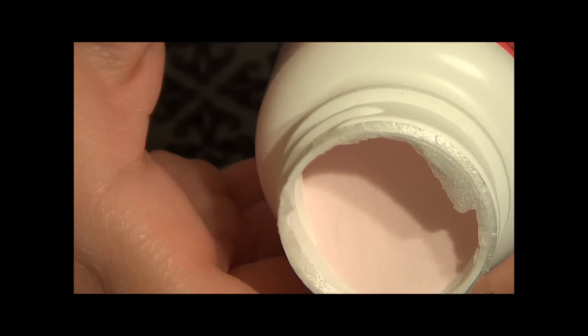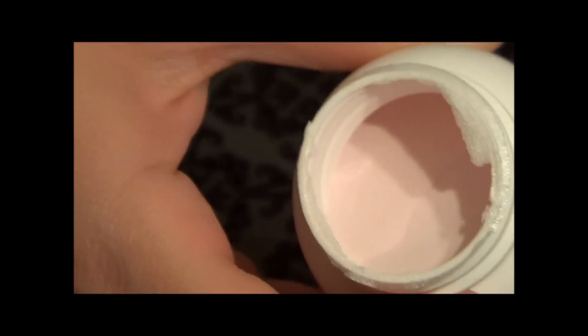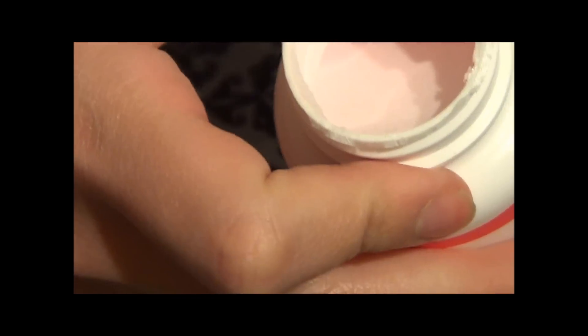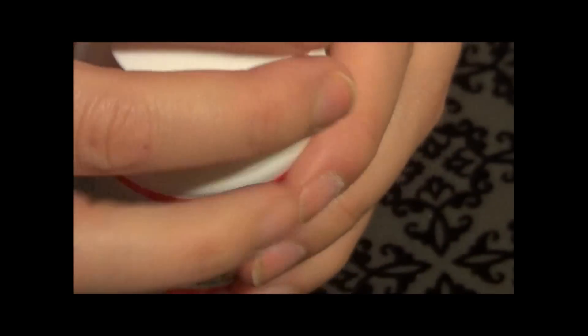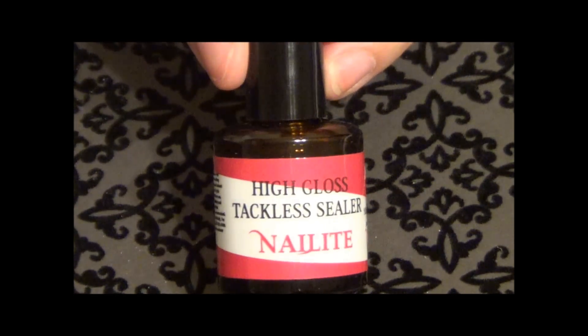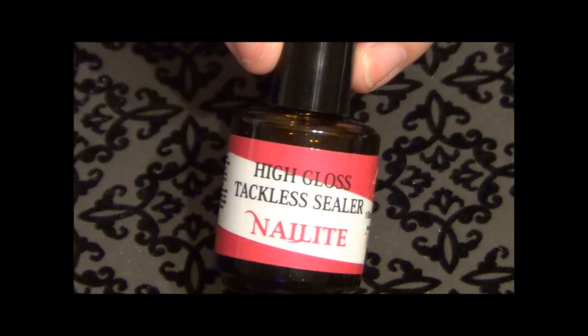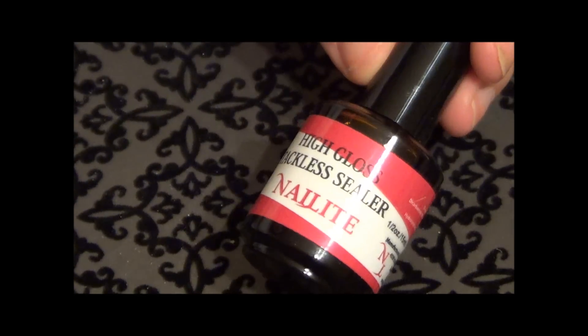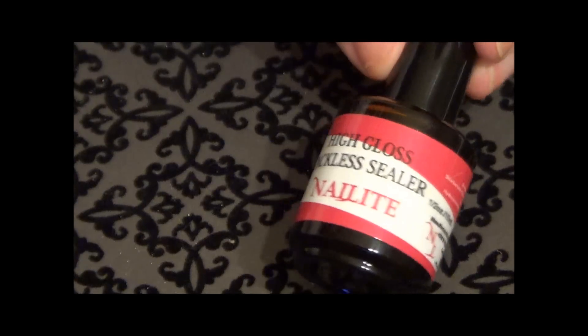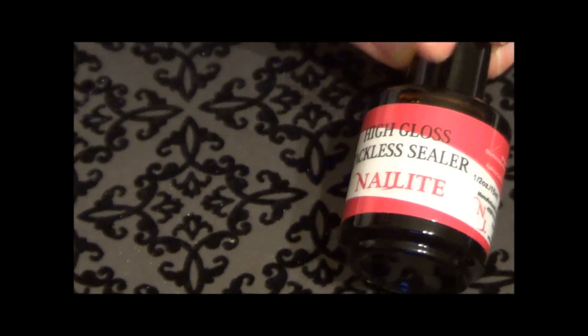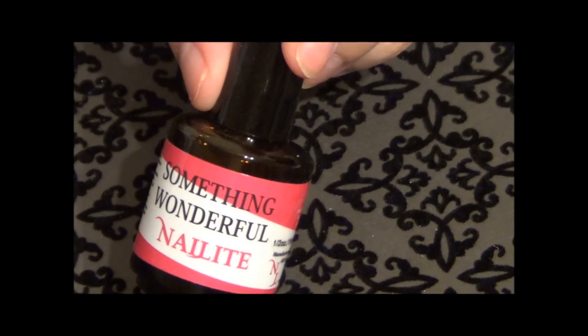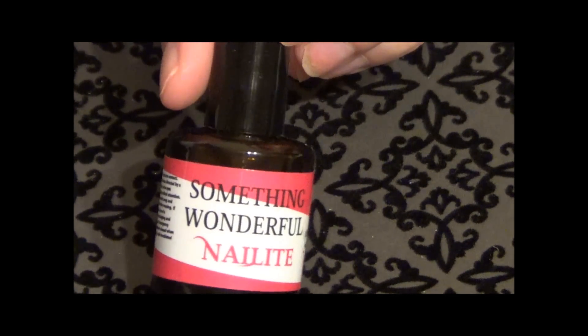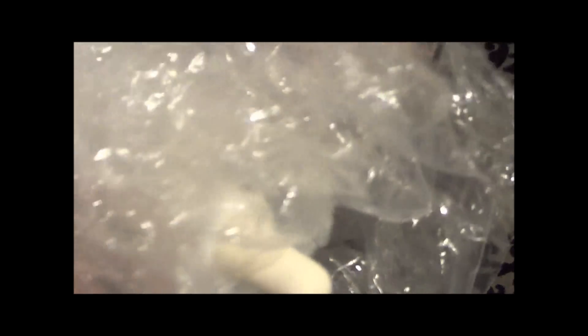¿Dónde está? No sé si lo puedan ver. Pero sí, sí está rosa. Miren, es el Deep Pink. Y este estaba a, si no me equivoco, $10.99. Este, que es el High Gloss Tackless Sealer, que básicamente es el gel UV, el top coat, para darle brillo, el toque final. Este, que es el Something Wonderful de Nail Light, que viene siendo el Protein Bond o Primer sin ácido.